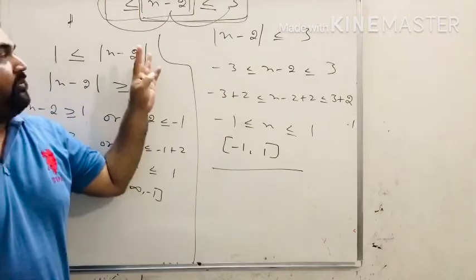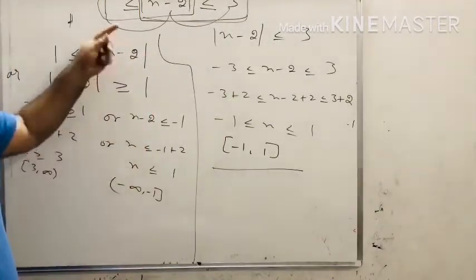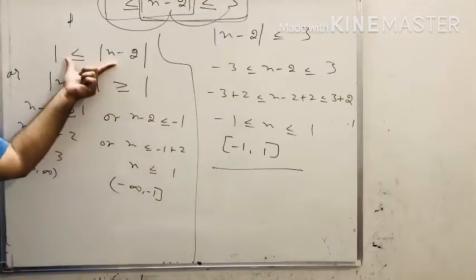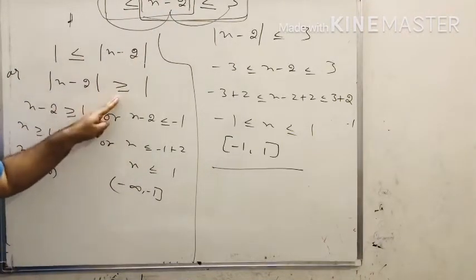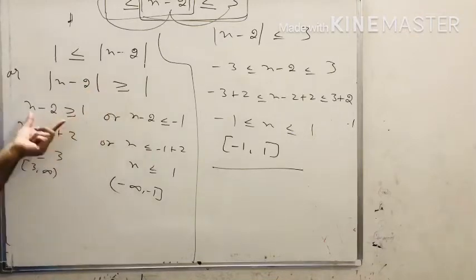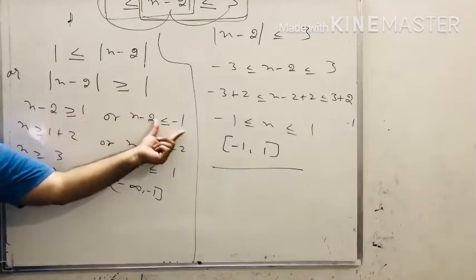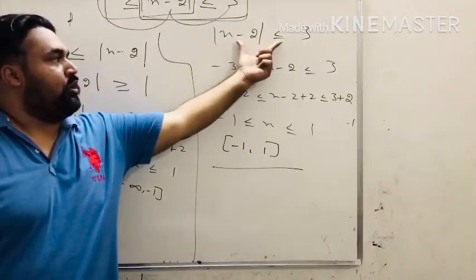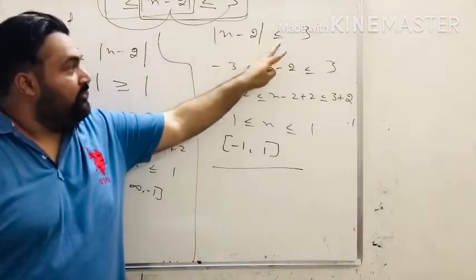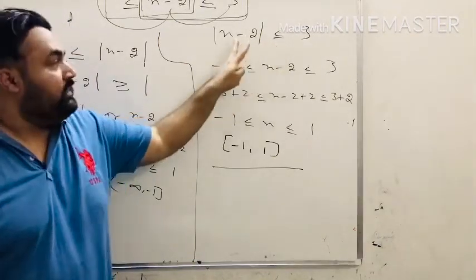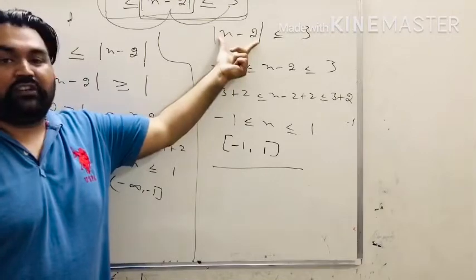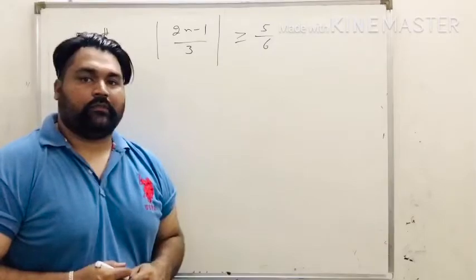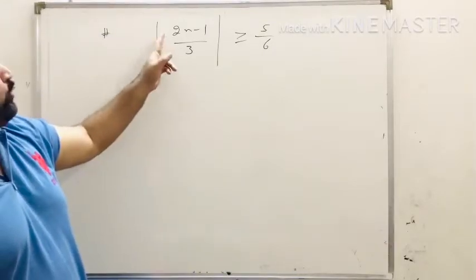To recap: the question is 1 less than or equals to modulus of x minus 2 less than or equals to 3. Whenever the question is in this form, we split it into two parts. The first part has sign greater than 1 — whenever the sign is greater than, this becomes greater than or equals to 1 or less than or equals to minus 1. The second case is modulus x minus 2 less than or equals to 3 — whenever the sign is less than or equals to, the value becomes minus 3 to 3.